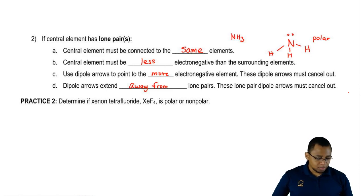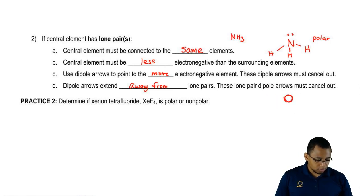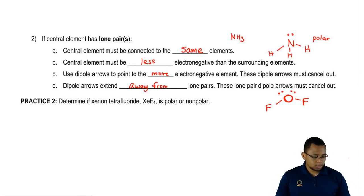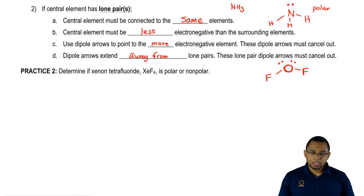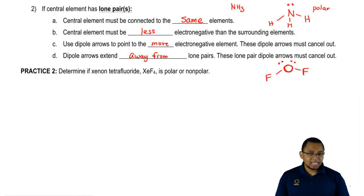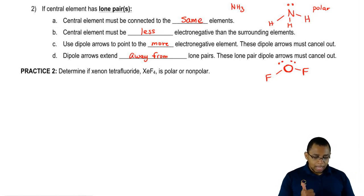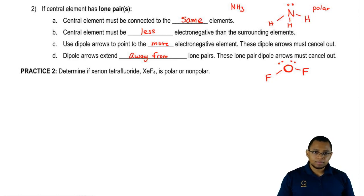Now let's take a look at another example: OF2. Our central element is oxygen with two fluorines connected to it. First rule — the central element must be connected to the same elements all the way around, which it is. Second, the central element must be less electronegative than the surrounding elements, which it is. Now we have to use dipole arrows for parts C and D — use dipole arrows to point to the more electronegative element.